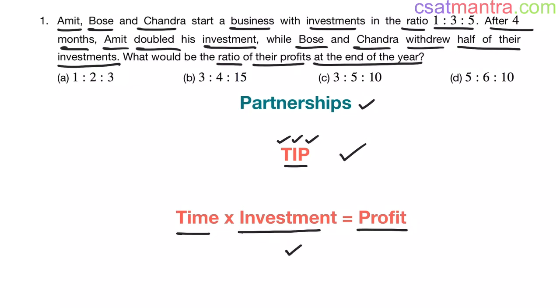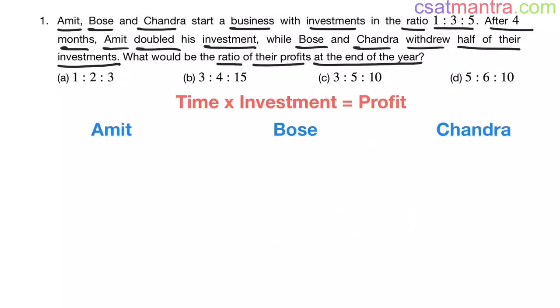You invest some amount for some time, you would be getting the profit. Now, we have Amit, Bose and Chandra. They started a business with investments in the ratio 1:3:5. So their investments will be x, 3x, and 5x.